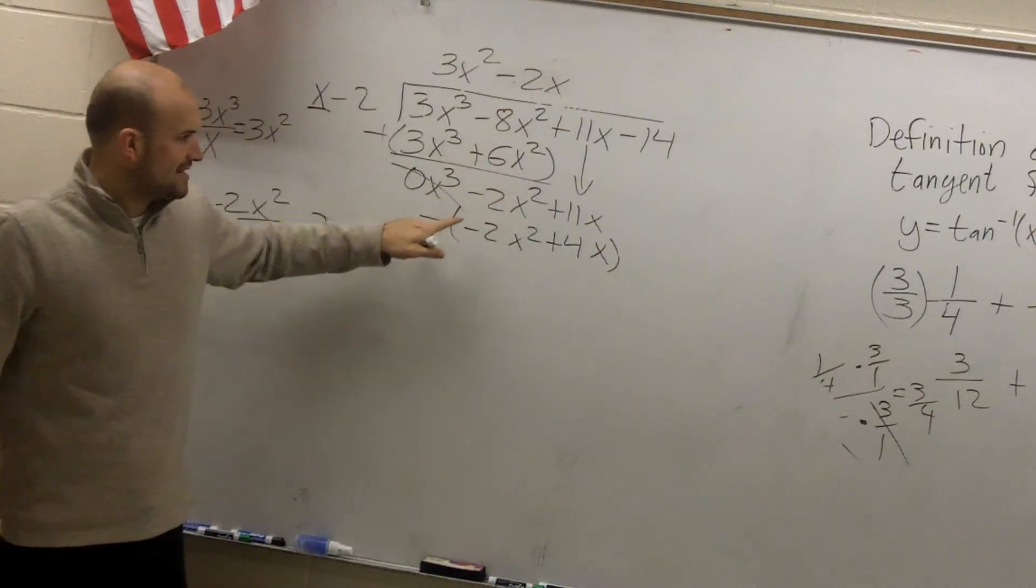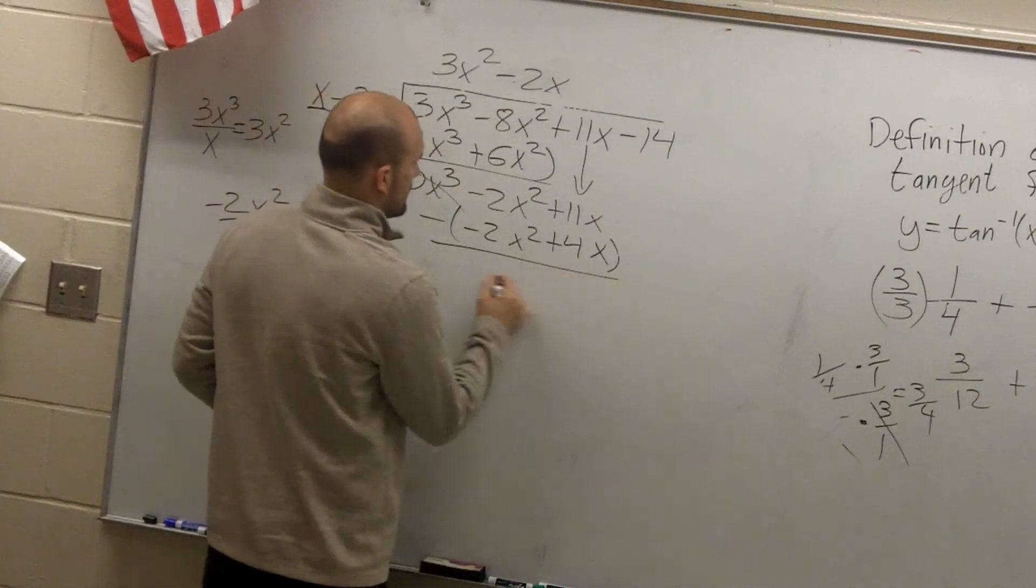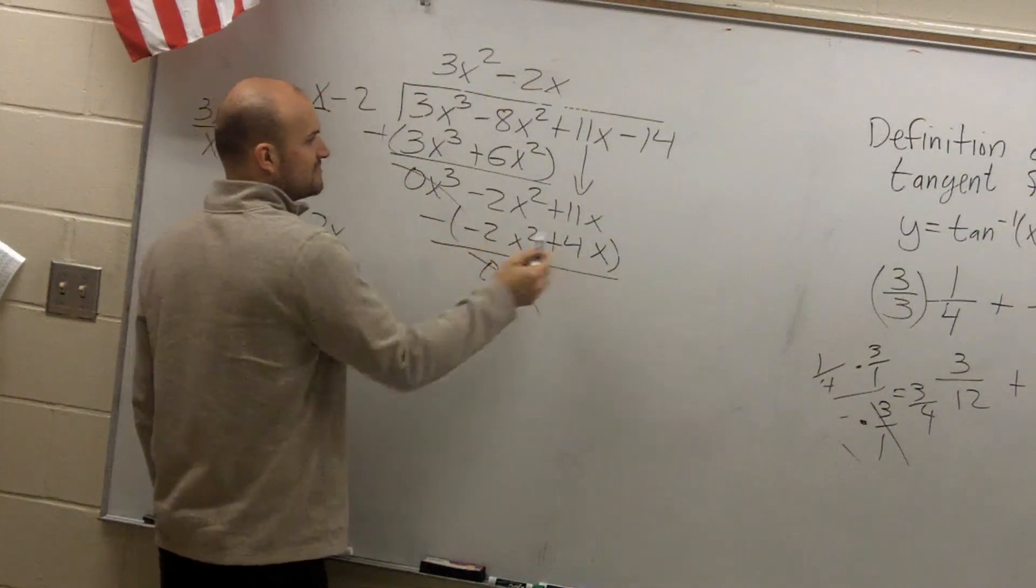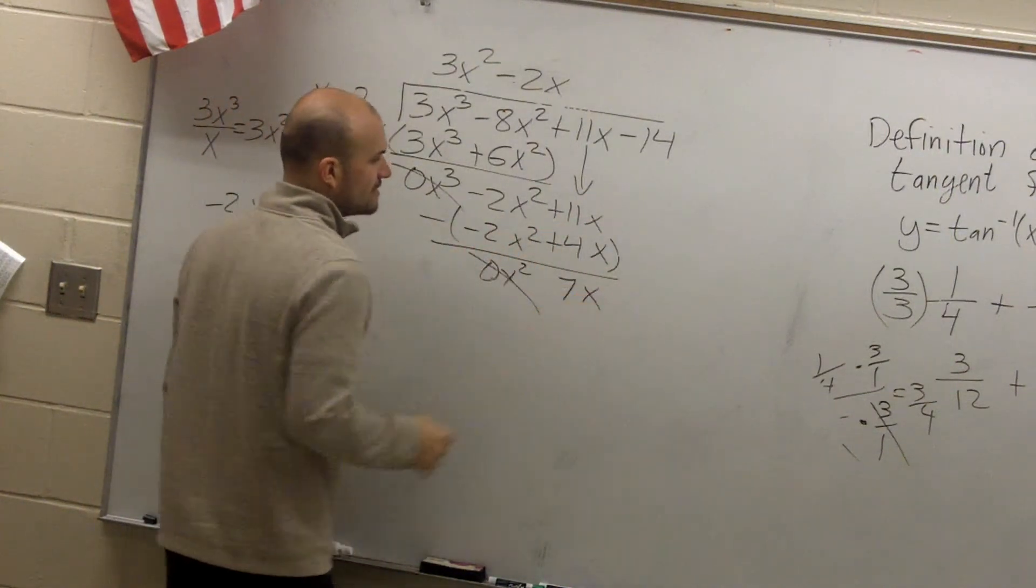Negative 2x squared minus a negative 2x squared. 0x squared. 11x minus 4x is going to be a positive 7x.